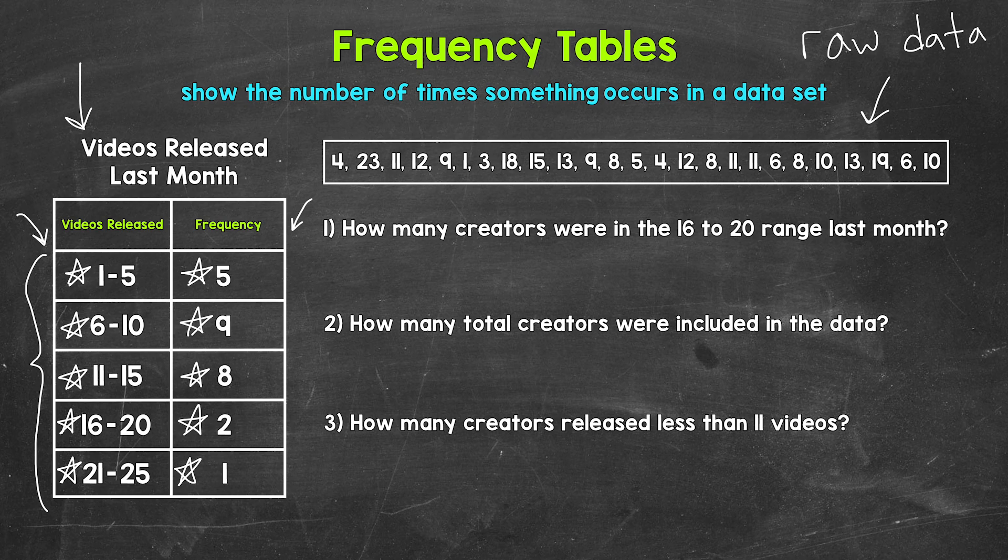Starting with number 1, where we have how many creators were in the 16 to 20 range as far as videos released last month. Here is 16 to 20 right here. So we have 2 creators. 2 creators released 16 to 20 videos last month. So they were in that range.